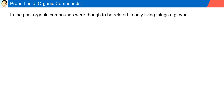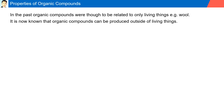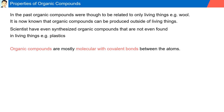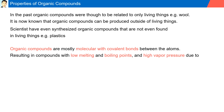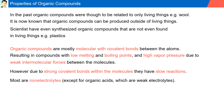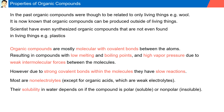Properties of organic compounds. In the past, organic compounds were thought to be related only to living things — for example, wool. It is now known that organic compounds can be produced outside of living things. Scientists have even synthesized organic compounds not found in living things, such as plastics. Organic compounds are mostly molecular with covalent bonds between atoms, which results in low melting and boiling points and high vapor pressure due to weak intermolecular forces. However, due to the strong covalent bonds within the molecules, they react very slowly. Most are non-electrolytes, except for organic acids, which are weak electrolytes. Their solubility in water depends on whether the compound is polar (soluble) or non-polar (insoluble).